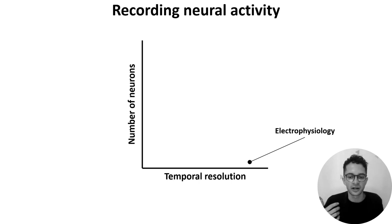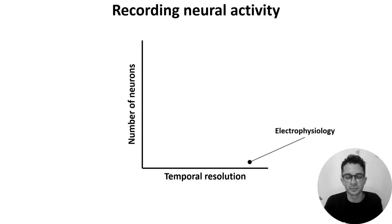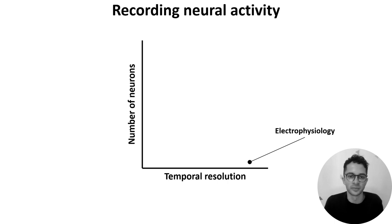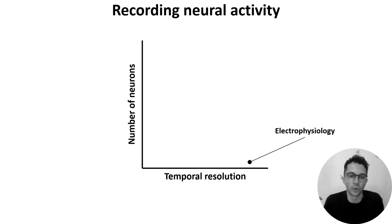There are many different methods for recording neural activity, with different pros and cons. One way to describe them is on a 2D axis, where the x-axis shows the method's temporal resolution, and the y-axis shows the number of neurons the method can record simultaneously.